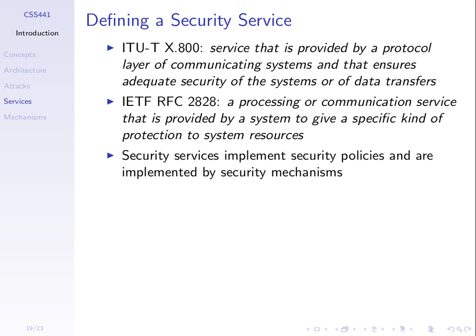Once we see those services and mechanisms, we'll say we use security mechanisms like encryption and digital signatures to implement services. An organization has a policy — for example, a student can only see their own grades, not other students' grades — and we use security services to implement those policies and mechanisms to implement those services. This course focuses on the mechanisms.